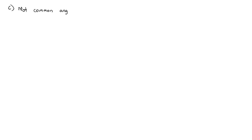All the problems we've solved so far have had nice, pretty angles that we're used to working with, but we don't always have our common angles. So what do we do if we don't have our common angles? For example, if we've got the sine of x equals negative 0.29, the short answer is we're going to use a calculator to find the other angle.